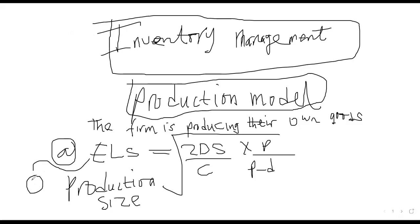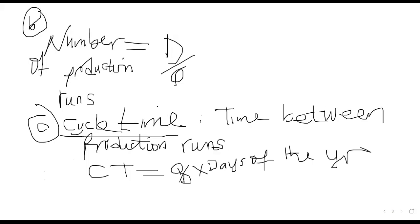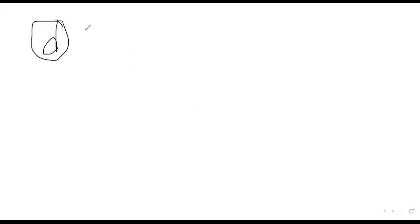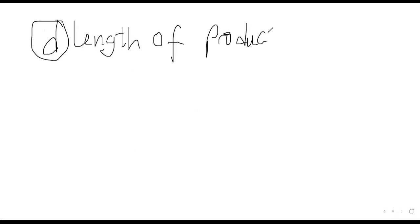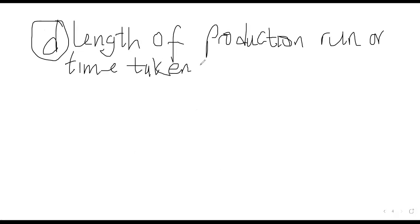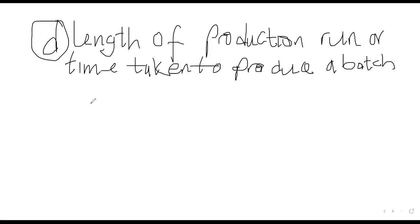This whole thing represents cycle time — time between production runs. Then time taken to produce a batch — the length of production run — equals Q over P.